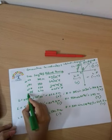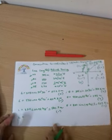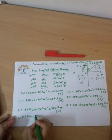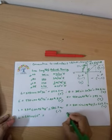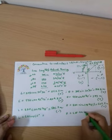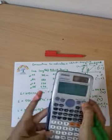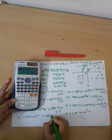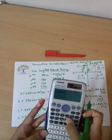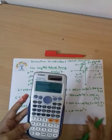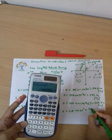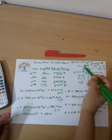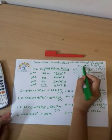Now for traverse leg DE, the length is 630 at 60 degrees. The latitude from 630·cos(60°) equals 315, and the departure from 630·sin(60°) equals approximately 545.6 meters. The direction is north-west, which is the fourth quadrant, where latitude is positive and departure is negative.